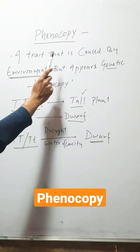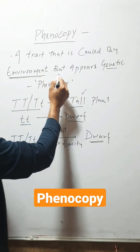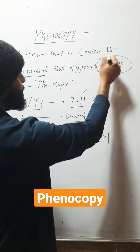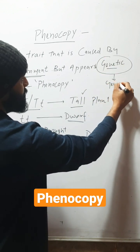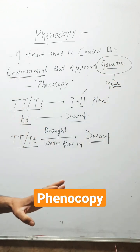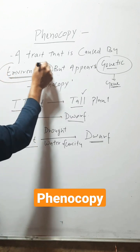Phenocopy is a trait that is caused by environment but appears genetic. By looking at that trait, it appears that it is influenced by genes. But actually it is not influenced by genes — it is influenced by environment.